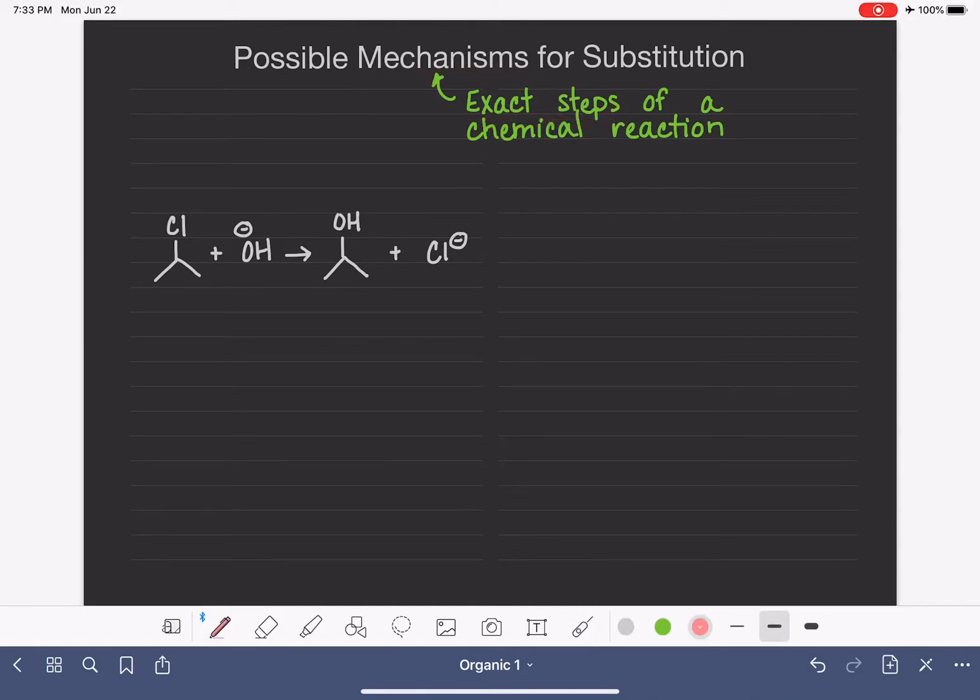We're going to look first at possible mechanism number one. And we're going to use this overall substitution reaction as our example. And so we already have our reactants, our electrophile and our nucleophile, and our product and our leaving group in place for us.